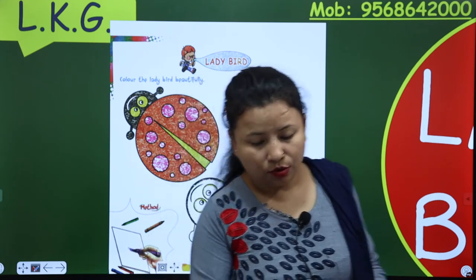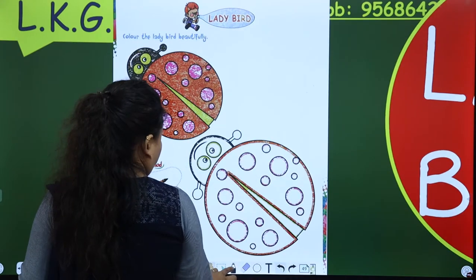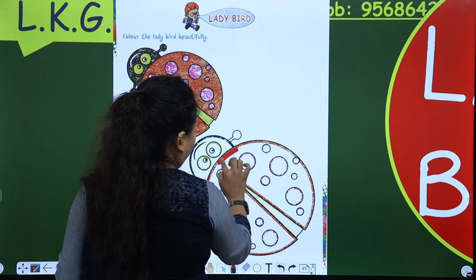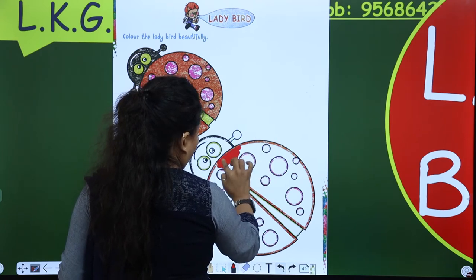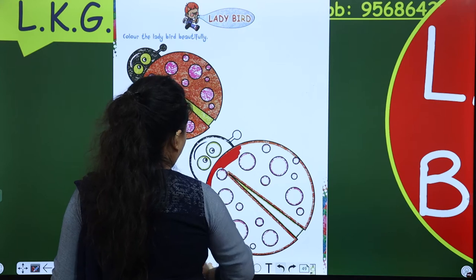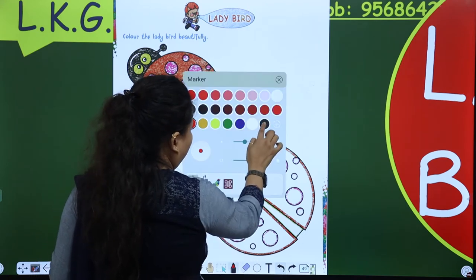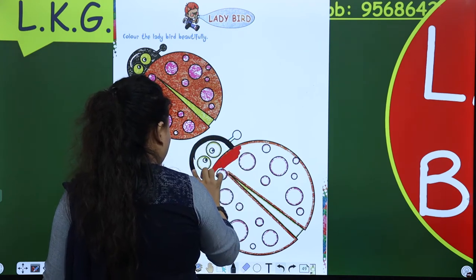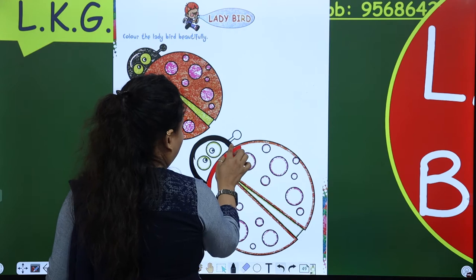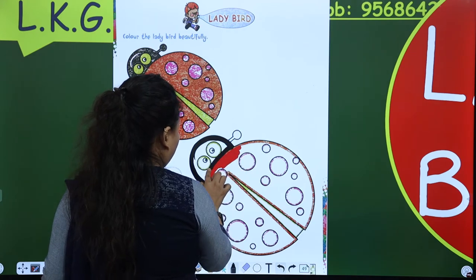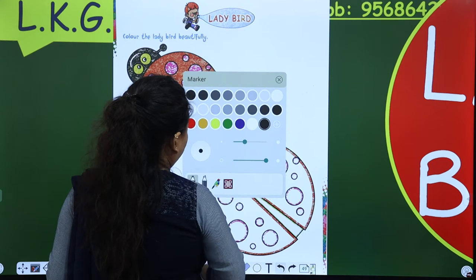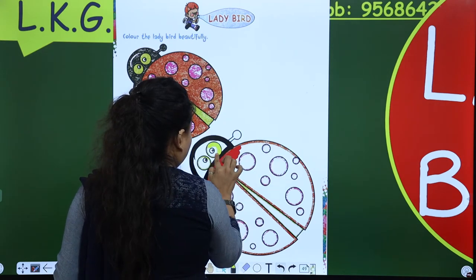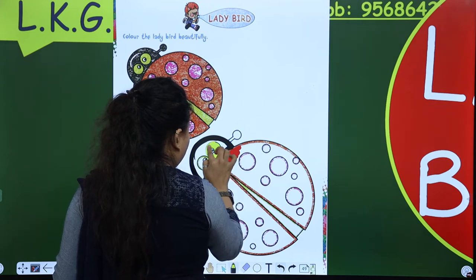So now how to color it? First of all make an outline. The hat is of black color, so pick a black color and make an outline. Now the eyes are of yellow color, so make a yellow color in the eyes.